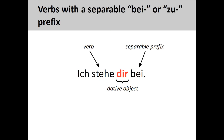Some verbs with the separable 'bei' or 'zu' prefix also take a dative object. For example, 'ich stehe dir bei' — I support you, or I stand by you. Otherwise, the only really sure way to recognize German verbs that take a dative object, of which there are about 50, is to memorize them.